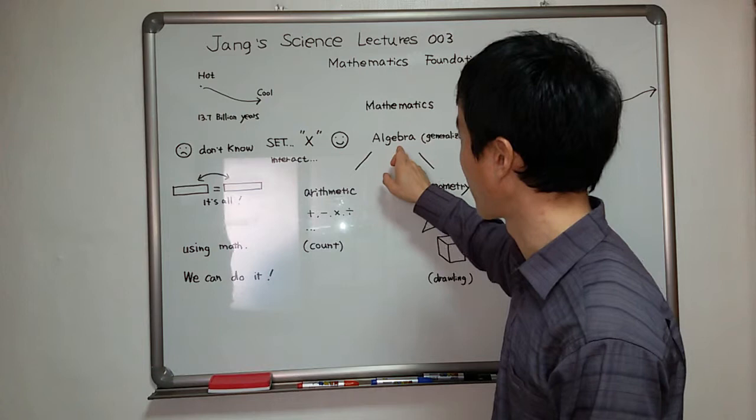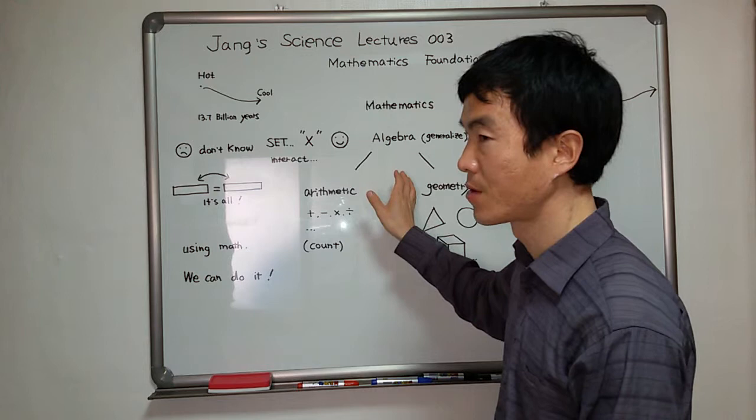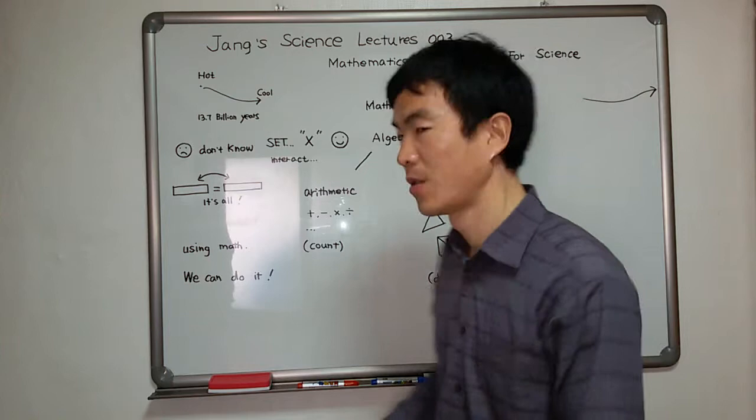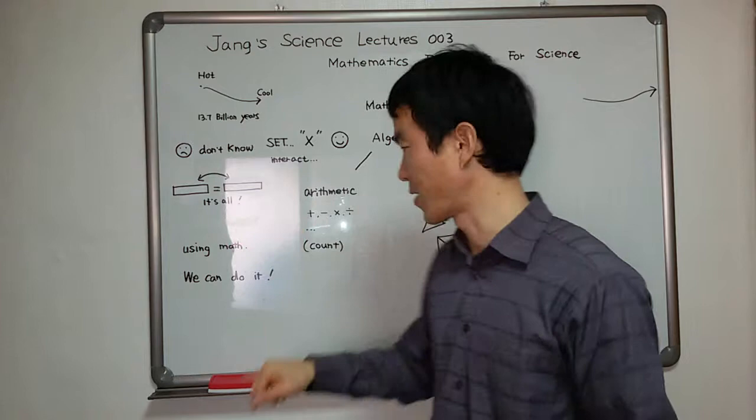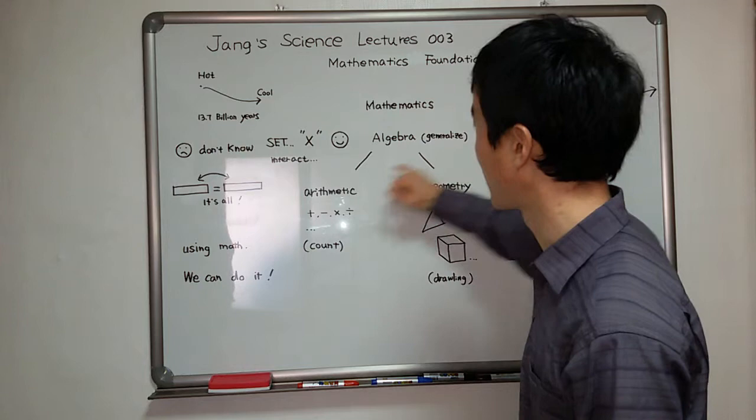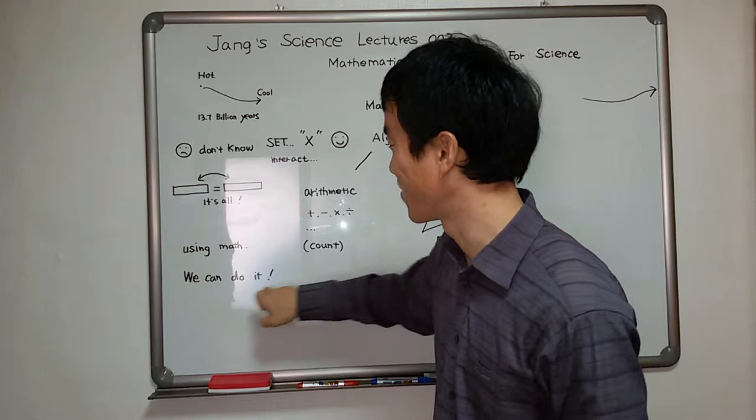Mathematics: arithmetic, geometric, three circles generalized algebra. For arithmetic, we can count 1, 2, 3, 4, 5, 6, 7, 8, 9, 10. Human beings have ten fingers. Counting, drawing, generalizing. We can do it.